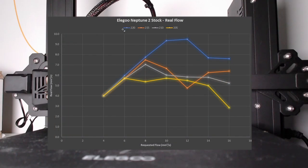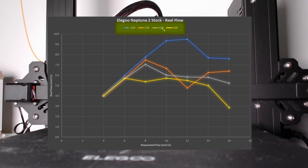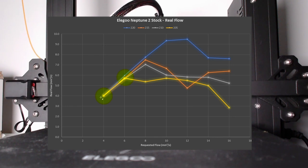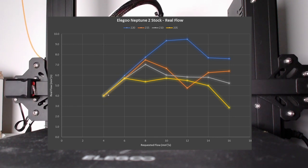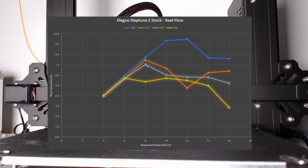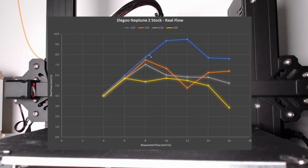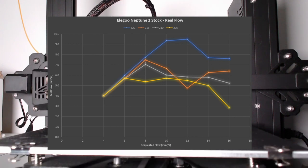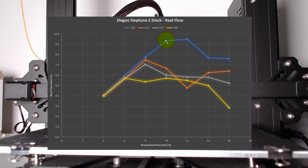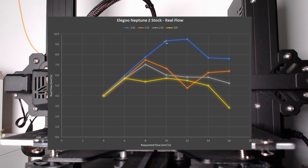The diagram shows the result of the baseline test for temperatures from 205 to 220 degrees Celsius. For a requested flow of 4 to 6 cubic millimeters per second, the real extruded amount is met for all four temperatures. From 8 cubic millimeters per second, the lowest three temperatures get into under-extrusion because the extruder begins to skip steps and grind on the filament. Only with 220 degrees, it's possible to get up to almost 10 cubic millimeters per second. The dip in the orange line comes from a measurement error or maybe dirt in the extrusion path.